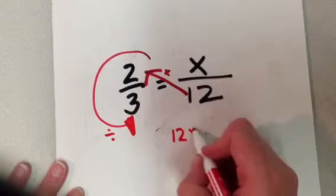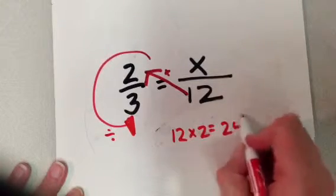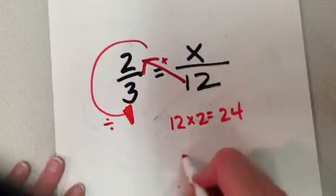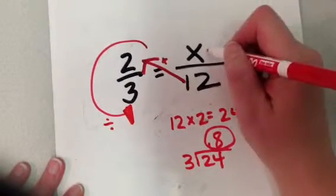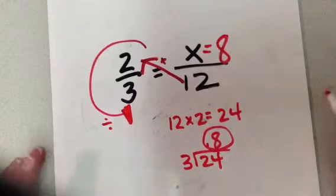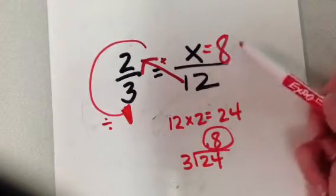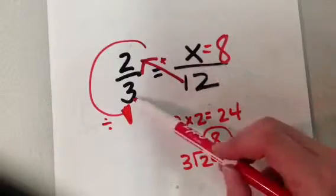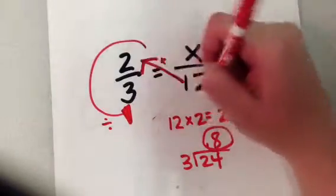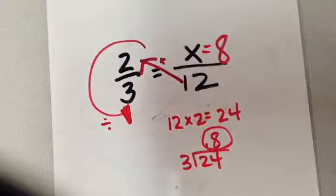So here we go. 12 times 2 is 24, right? And now I'm going to take 24 and divide it by 3, which is 8. So I know in this case that x equals 8, because that is the only number that when I multiply with the 3, it would equal that 24 that these two guys equal to make it proportional.